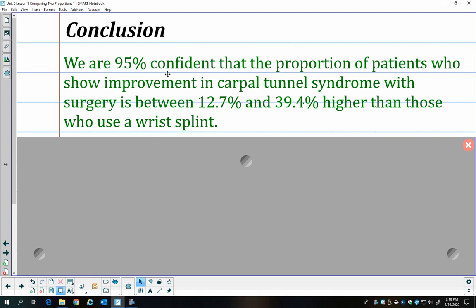So as usual, we can say we're 95% confident. I put the surgery patients first, so I'm going to talk about them since I've got a positive difference. That means that in general, my surgery patients do better as far as healing goes. So we're 95% confident the proportion of the patients who show improvement in carpal tunnel syndrome with surgery is between 12.7% and 39.4% higher than those who use wrist splints.